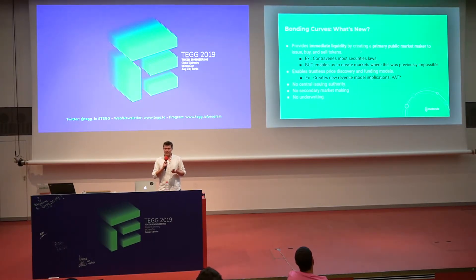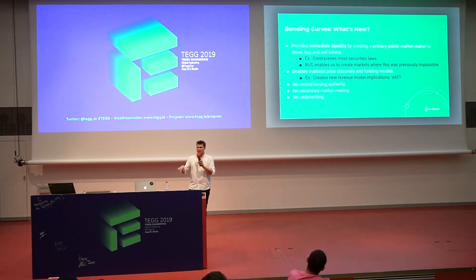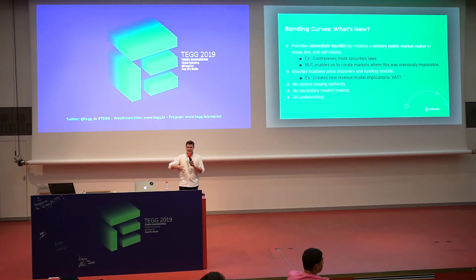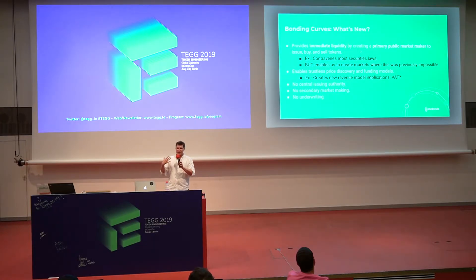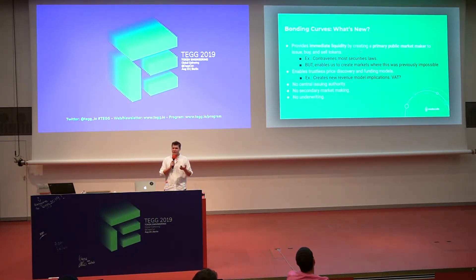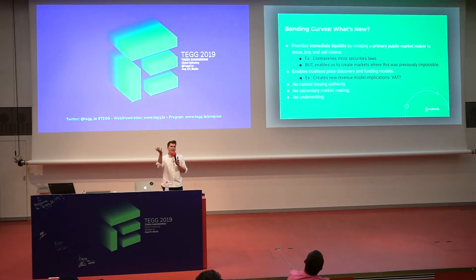Bonding curves provide immediate liquidity by creating a primary public market maker to issue, buy, and sell tokens. As a side note, this contravenes most securities laws — most reg D or reg C exempt securities offerings have a lock-in period of 3 to 12 months, and bonding curves by design topple that regulation. But what they really enable is creating markets where it was previously completely impossible, like for a meme — anything that is illiquid or hard to price.